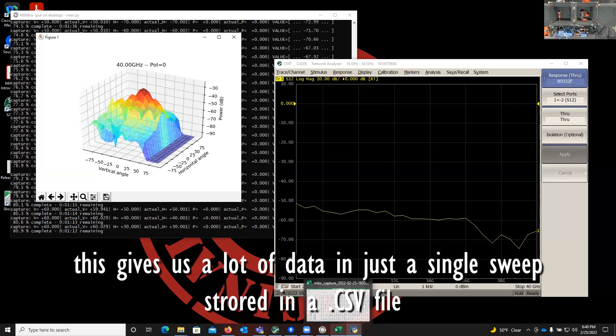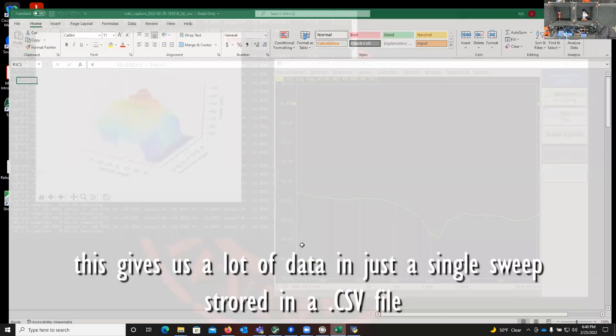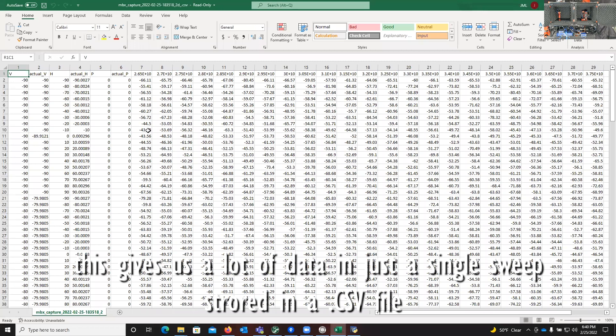The outcome of this is the CSV file, where we collect all the data from the position, and then the traces for each position in H and V.